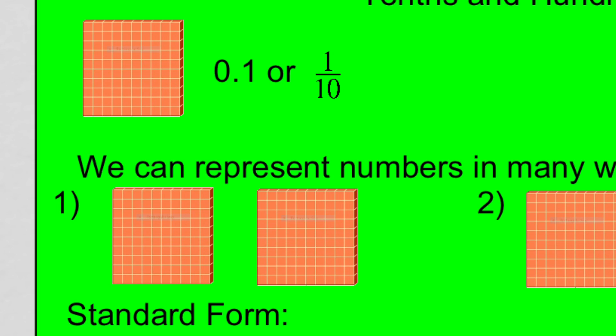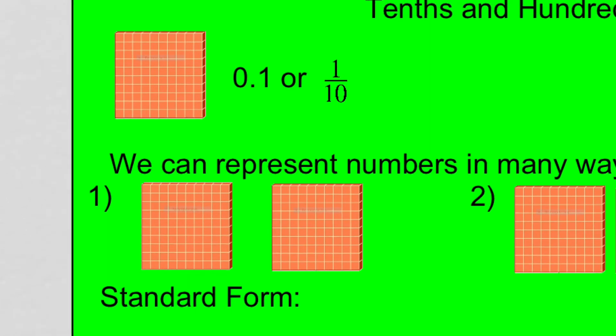The idea is that 10 of these hundredths fit inside one of these tenths — there are 10 of those hundredths strips in one of those tenths. That's the idea of our base 10 number system: everything is in groups of 10. To go from one place value to the next, it's always a factor of 10.